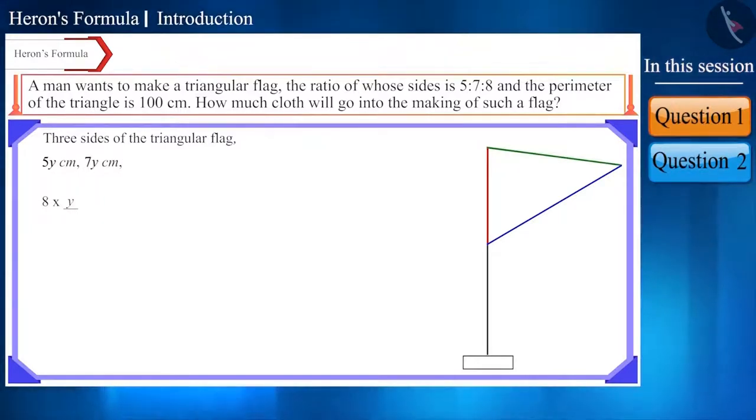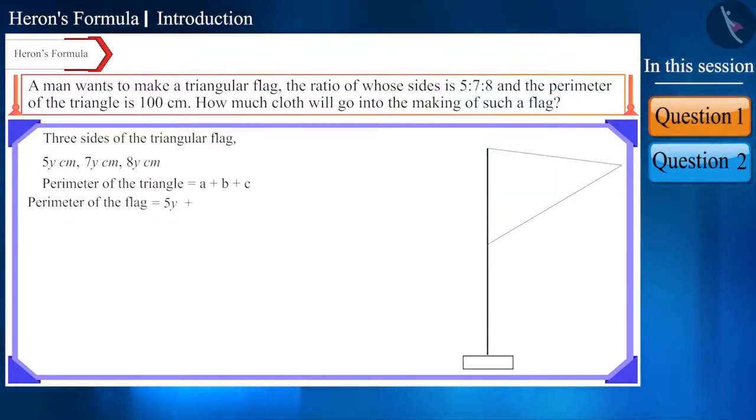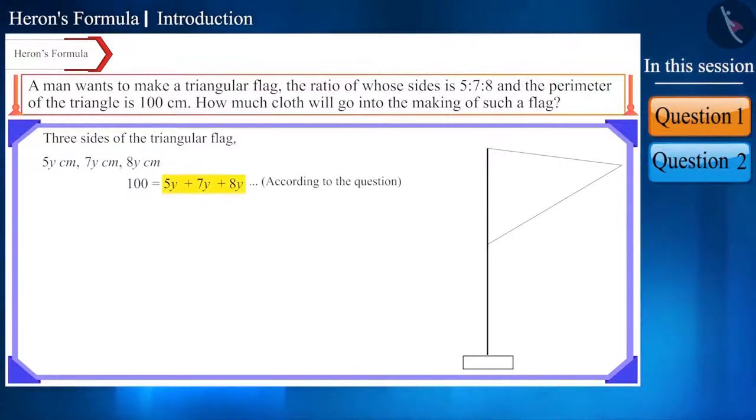the three sides of the triangular flag will be 5y cm, 7y cm and 8y cm respectively. Now we know that the perimeter of the triangle is equal to the sum of the lengths of all its three sides. So the perimeter of the flag is 5y plus 7y plus 8y. But in the question, we are given that the perimeter of the triangle is 100 cm. That is, this sum will be equal to 100 and the terms on the right, upon addition will become 20y. This way, 20y is equal to 100 and on solving we get y as 5.